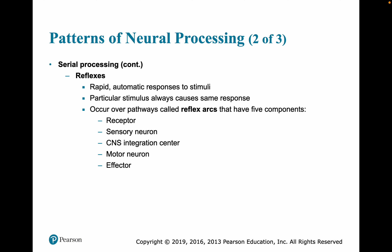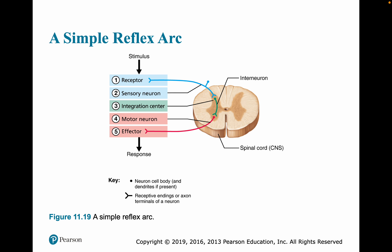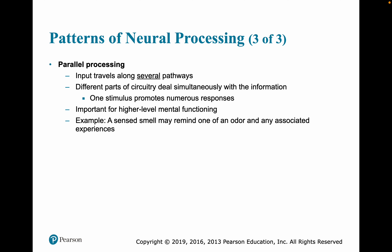Reflex arcs include the receptor, the sensory neuron, integration, the motor neuron, and the effector. Parallel processing gives us processing along several different pathways simultaneously. The different parts of the circuitry simultaneously deal with the information, so one stimulus promotes numerous responses. This is very important for higher-level mental functioning and is one of the ways a sense of smell, an odor, can remind us of an associated experience. Odors are very strong triggers of memory.